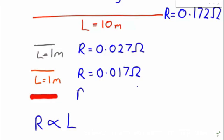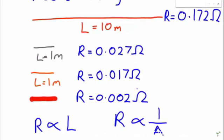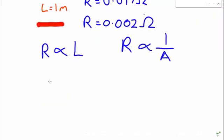However, our ohmmeter can't read that accurately, so it just says 0.002 ohms. So resistance is also inversely proportional to area. So if we took both of these equations into account, then we would get that resistance has to be proportional to length and inversely proportional to area.